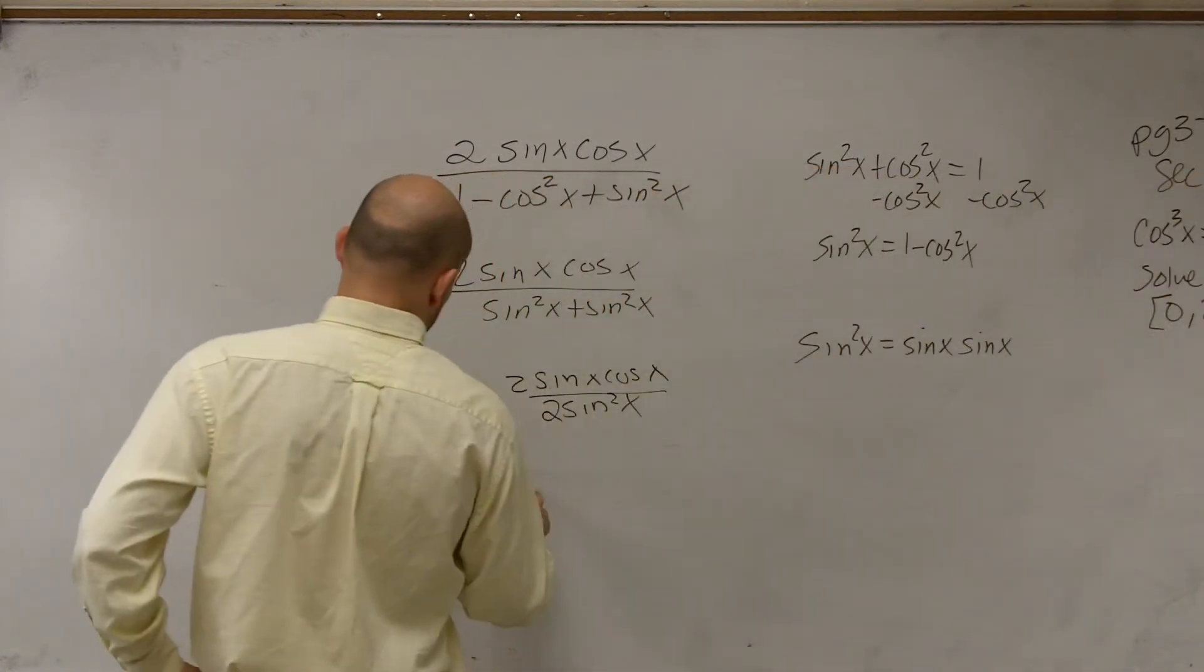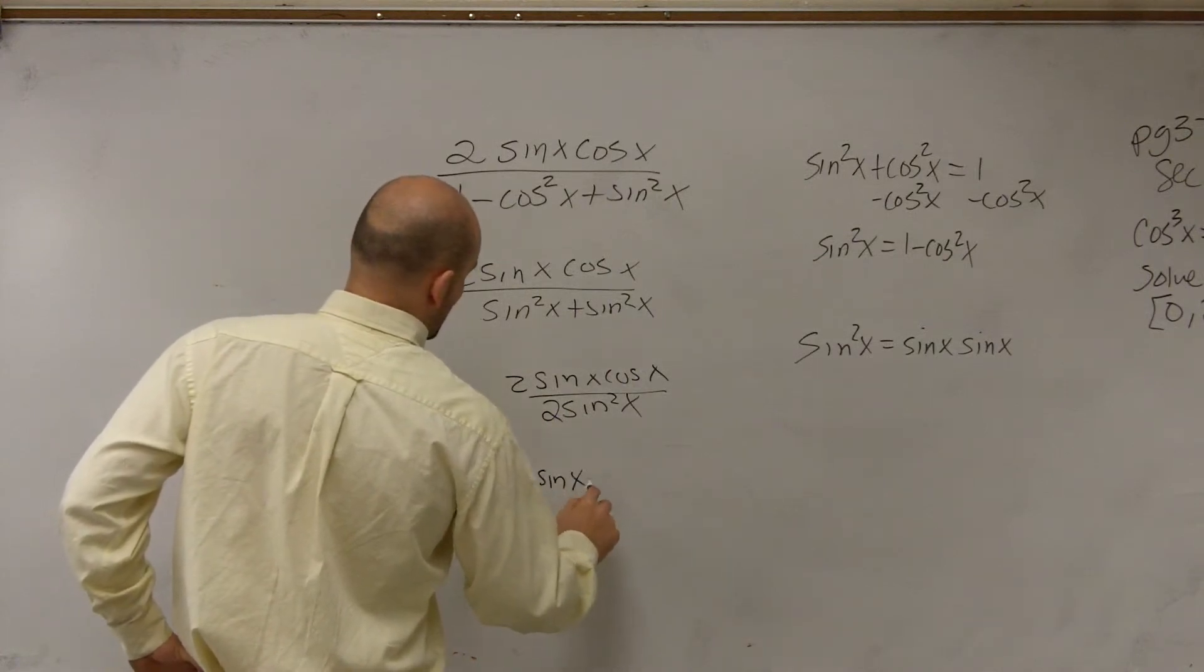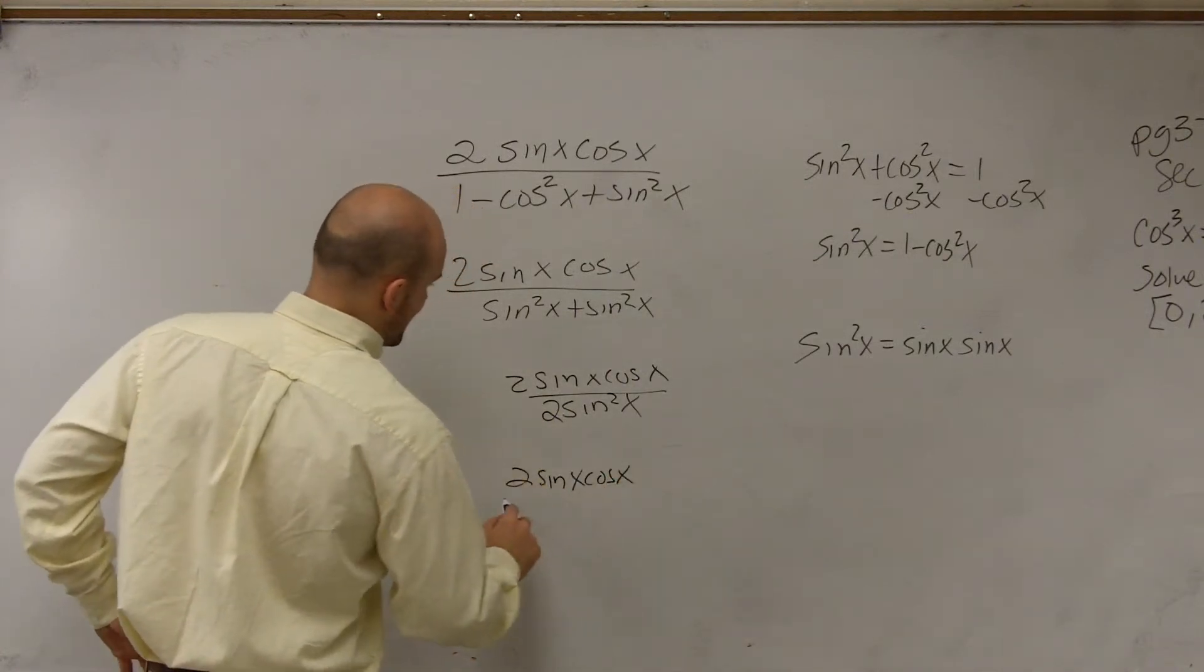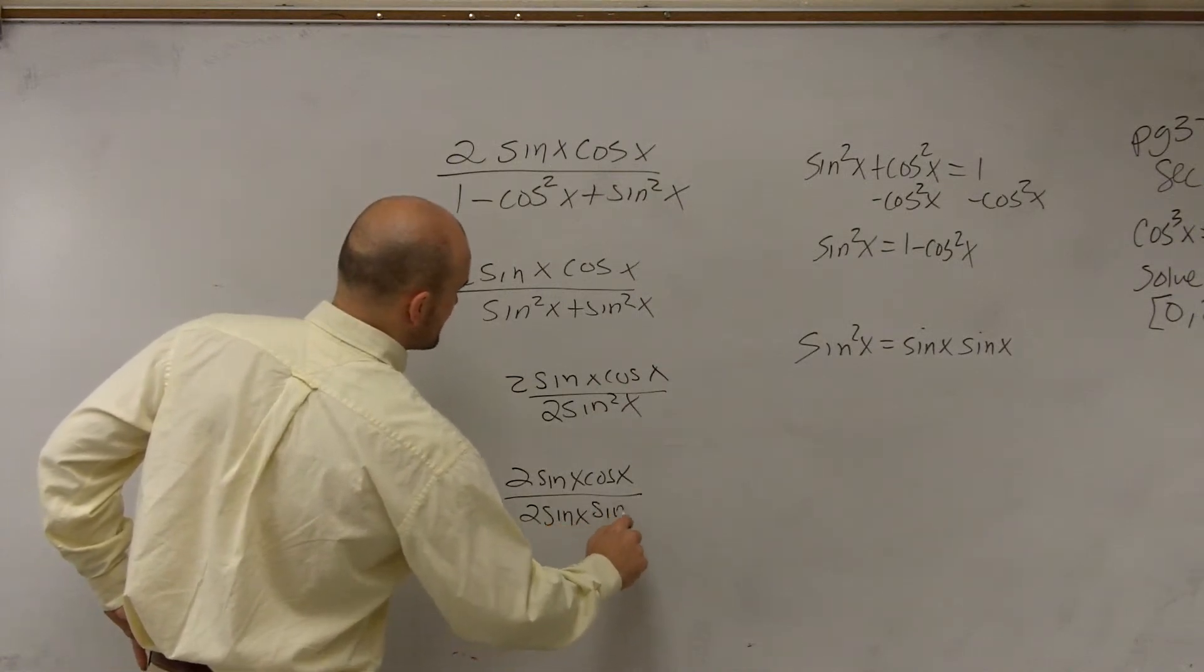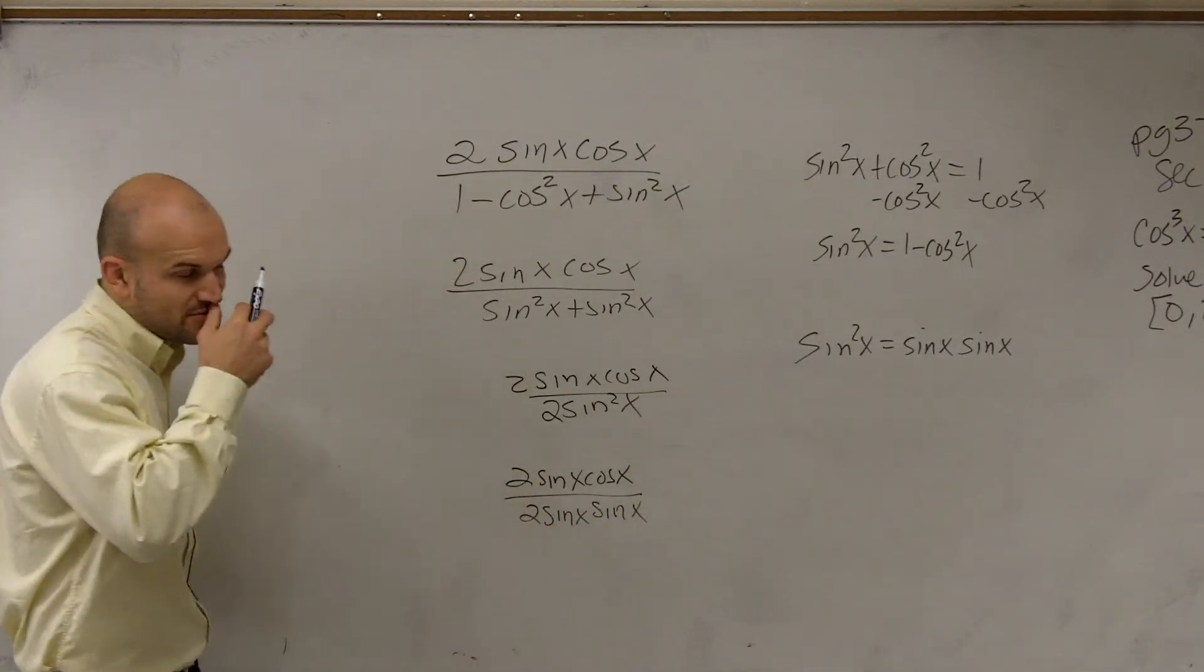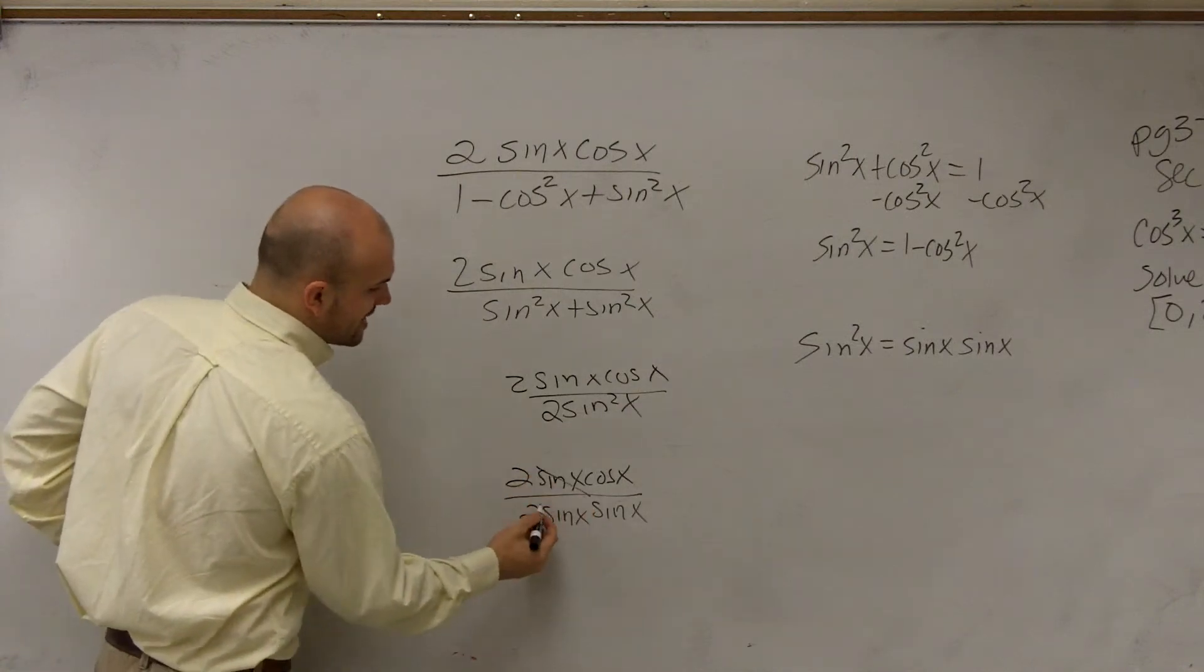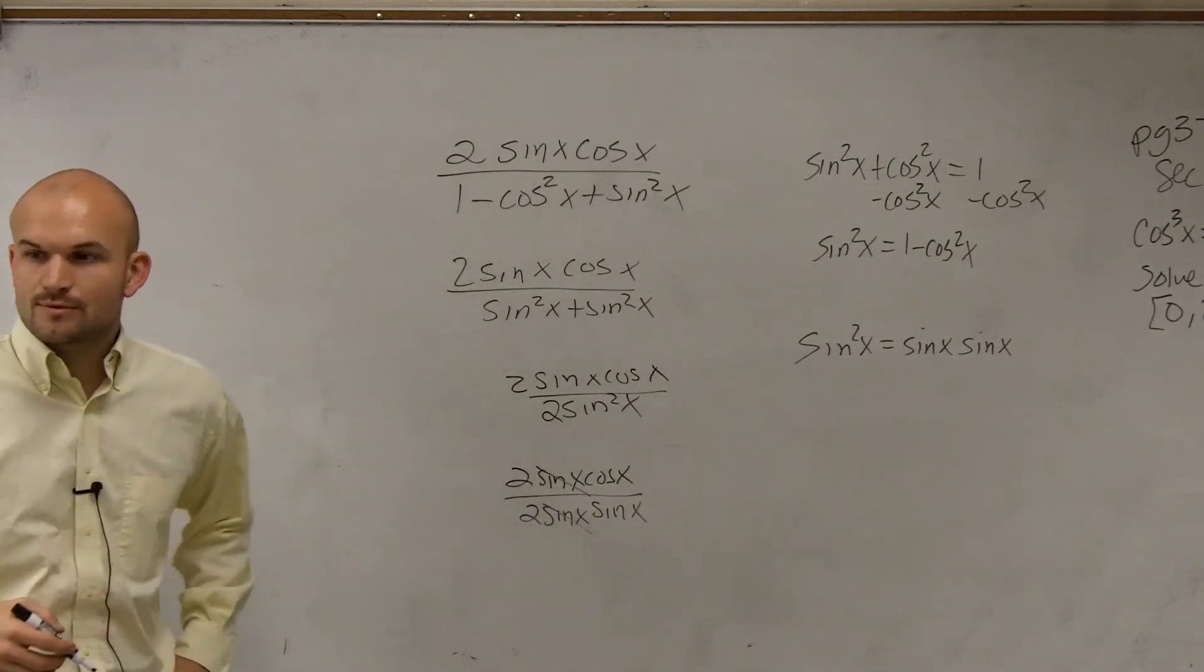So in reality, we have 2 sine of x times cosine of x divided by 2 times sine of x times sine of x. And the reason why I just write it out there is you can see that 1 sine of x divides out to equal 1.